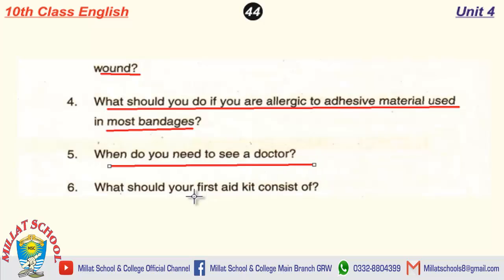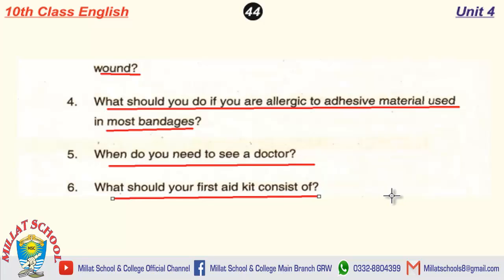What should your first aid kit consist of? A first aid kit should consist of a first aid book, bandages and elastic bandages, gauze and adhesive tape, antiseptic wipes and cotton wool, safety pins and tweezers, scissors and latex gloves, calamine lotion and analgesic tablets, and a clinical thermometer.